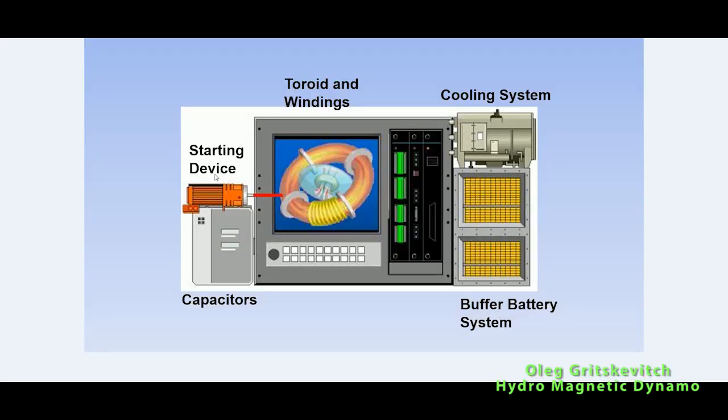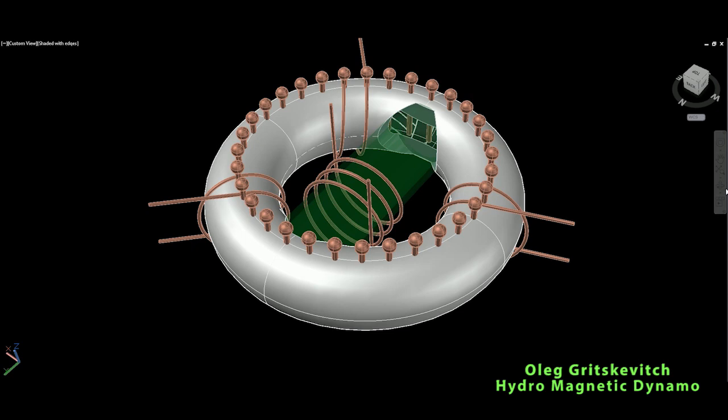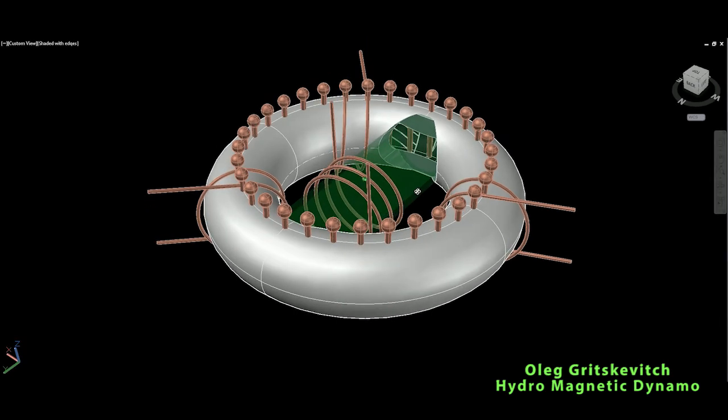In this image you can see we need a starting device with capacitors. We need high voltage and high currents to make this ionization happen inside the toroid. We also need a cooling system and buffer battery system because we have a nuclear reaction here, and this is not something to play with. This is patented.